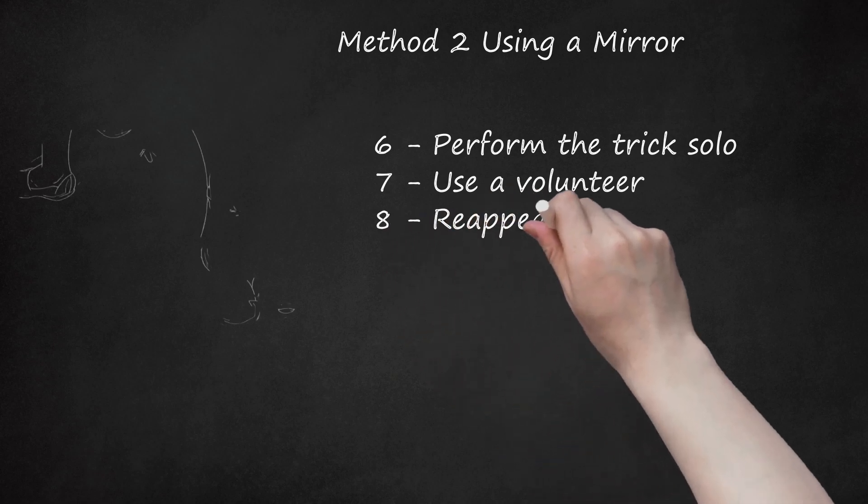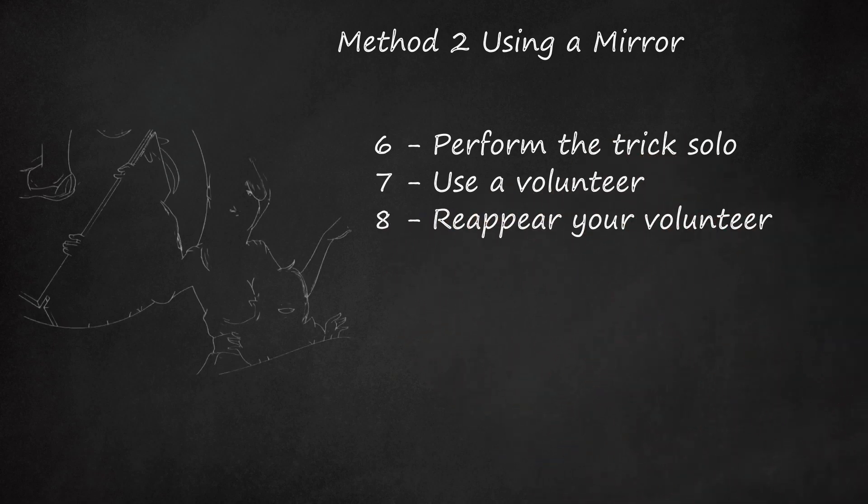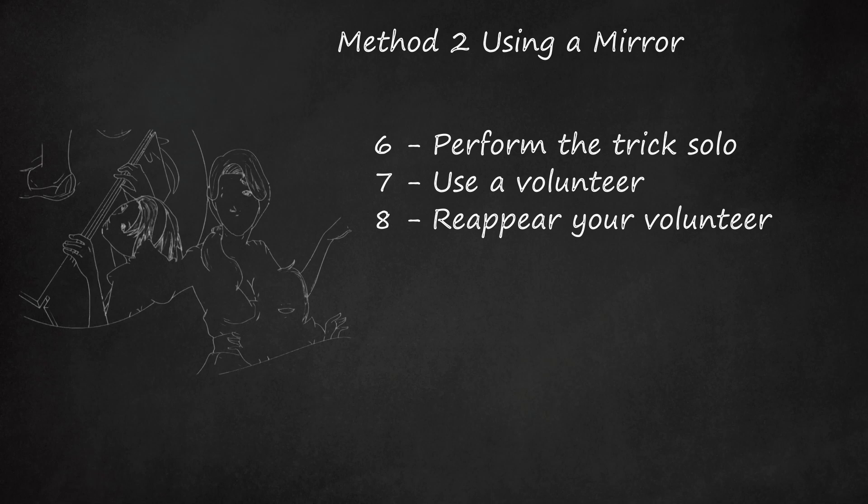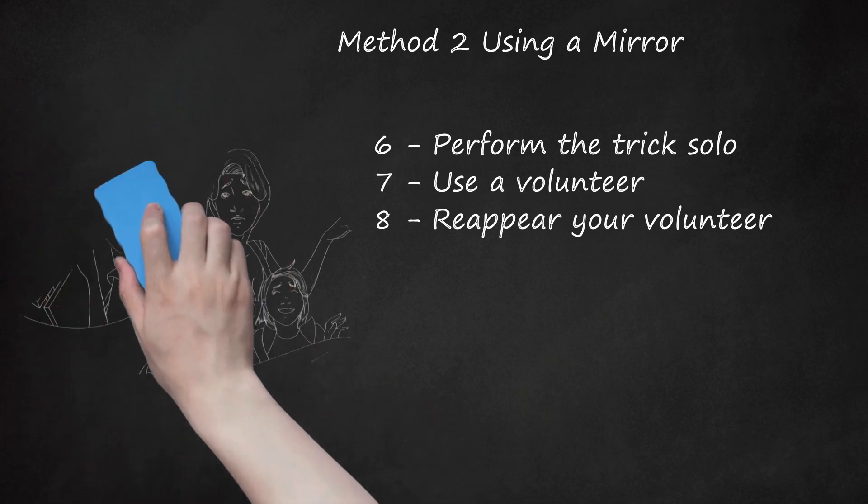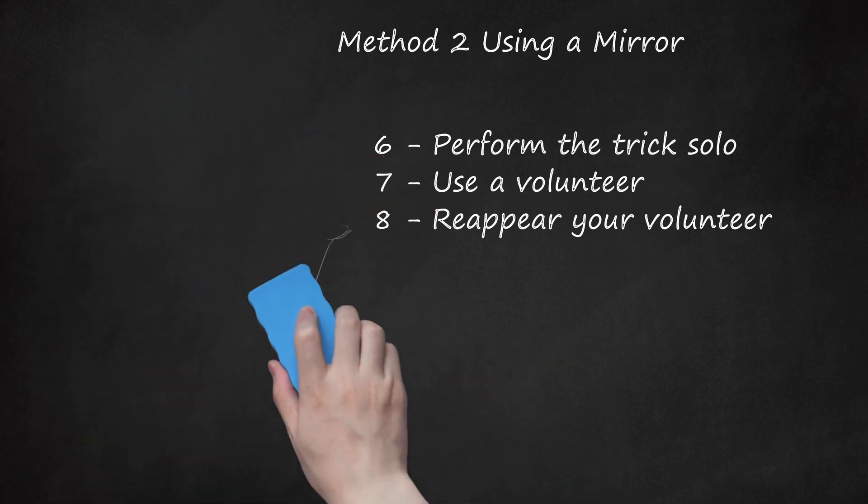Step 8 - Reappear your Volunteer. Hold the blanket up again. Have your volunteer carefully climb back onto the table. Stand in a location on the table that is sturdy. Your volunteer climbing onto the table could shift the balance of the table and spoil the trick. Once your volunteer is back in position, drop the blanket down and dazzle the audience.